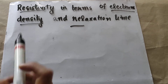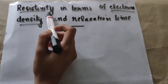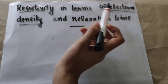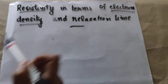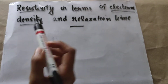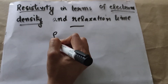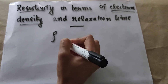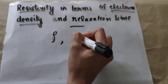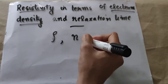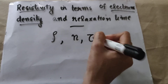Hi students, now we are going to write resistivity in terms of electron density and relaxation time — that is, resistivity rho in terms of electron density N and relaxation time tau.